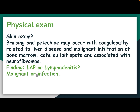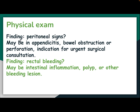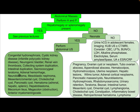Café-au-lait spots are associated with neurofibroma. Lymphadenopathy or lymphadenitis may indicate malignancy or infection. Peritoneal signs may be present in appendicitis, bowel obstruction, or perforation — these are indications for urgent surgical consultation. Rectal bleeding may indicate intestinal inflammation, polyps, or other bleeding lesions.